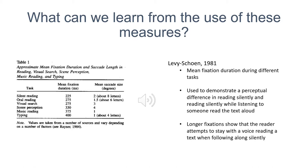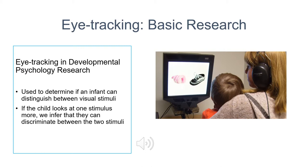Eye tracking is also used in basic developmental psychology research. It's used to determine if an infant can distinguish between visual stimuli when they are presented with the stimuli simultaneously. If the child looks at one stimulus more, we can infer that they can discriminate between the two stimuli. This is a preferential looking paradigm.